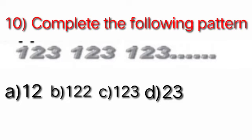Option A: 1, 2, 3. Option B: 1, 2, 2, 3. Option C: 1, 2, 3. Option D: 2, 3. Yes student, what comes after 1, 2, 3 is 1, 2, 3, which is our option C. So we will put a tick on option C.